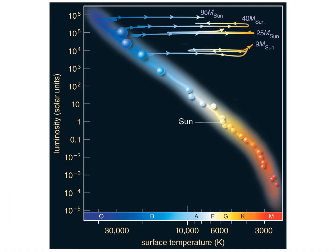The life track of a high-mass star on the H-R diagram shows it moving to the right into the supergiant phase, then zigzagging as it gets bigger and smaller during the various fusion stages.